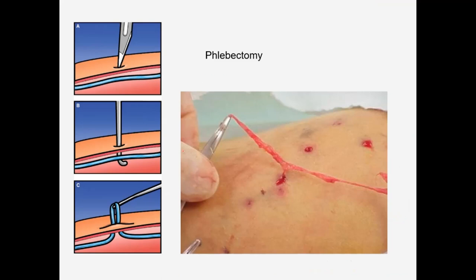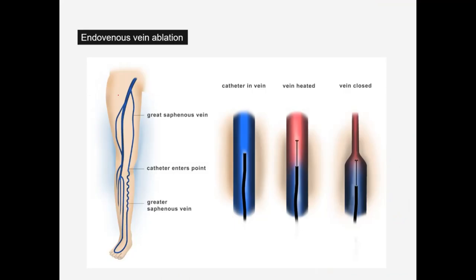For smaller problems, phlebectomy — a small cut to remove the vein — can be used. Another option is endovenous ablation: a catheter is inserted into the vein and heats it, closing it permanently.